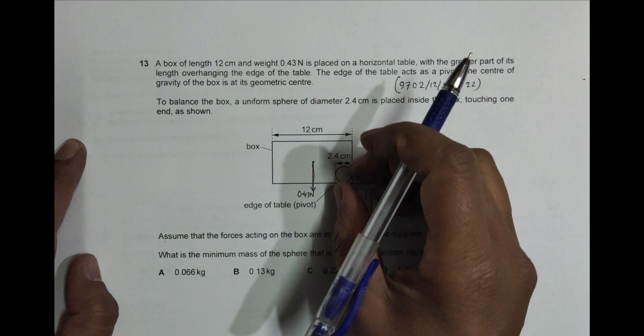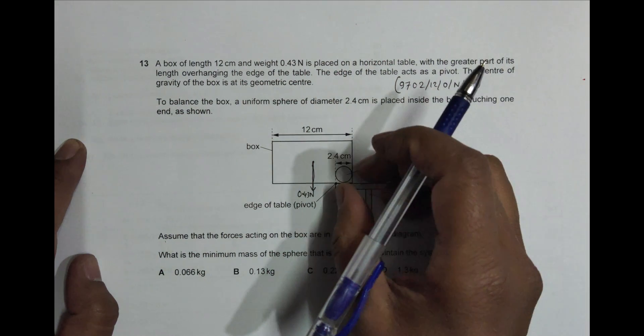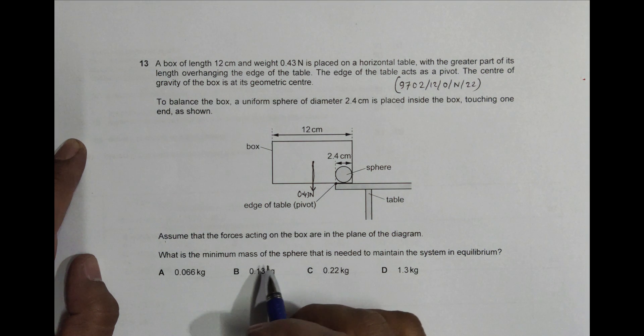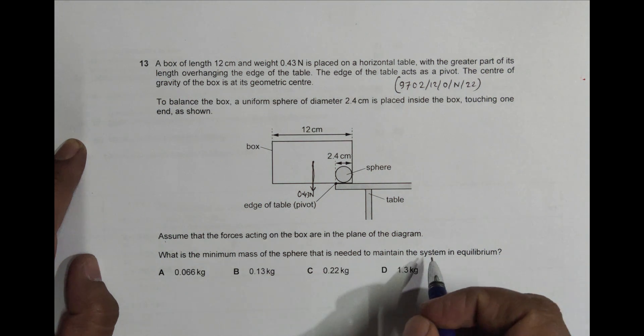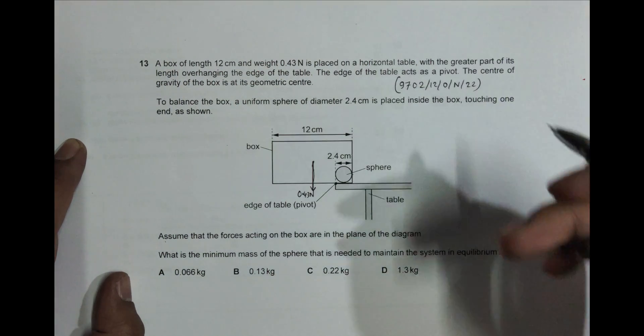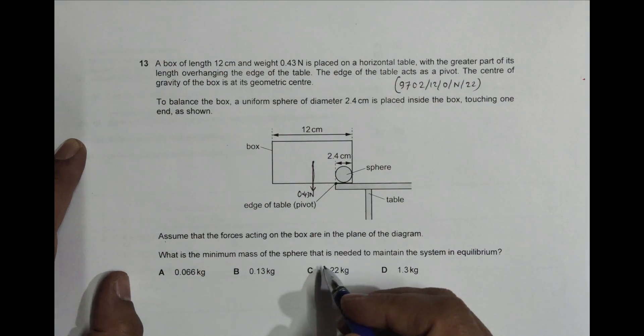Assume that the forces acting on the box are in the plane of the diagram, so that means the ball is also on the plane and the box also on the plane. What is the minimum mass of the sphere that is needed to maintain the system in equilibrium? So we have to balance this box so it doesn't fall like this.